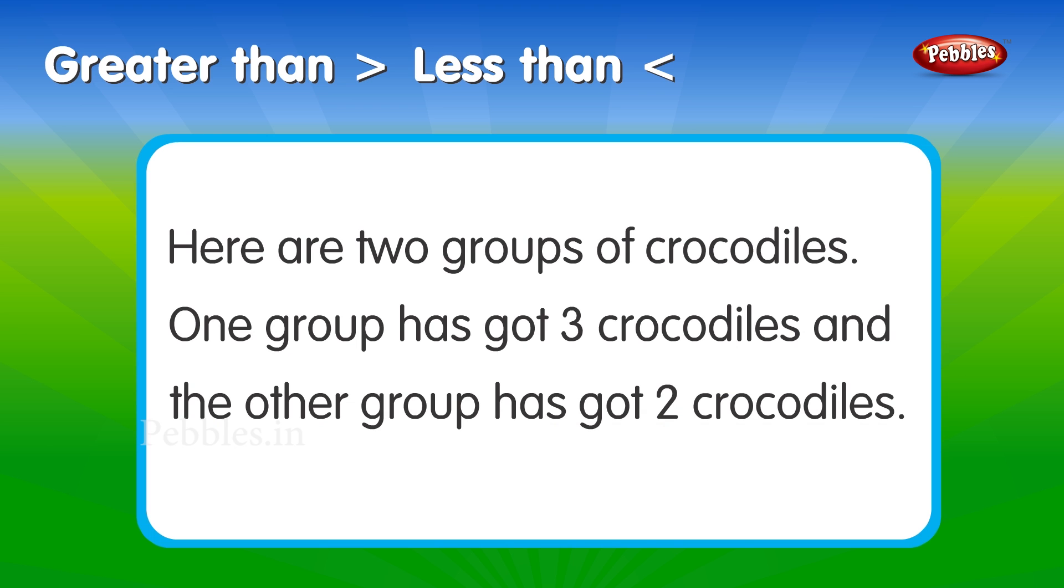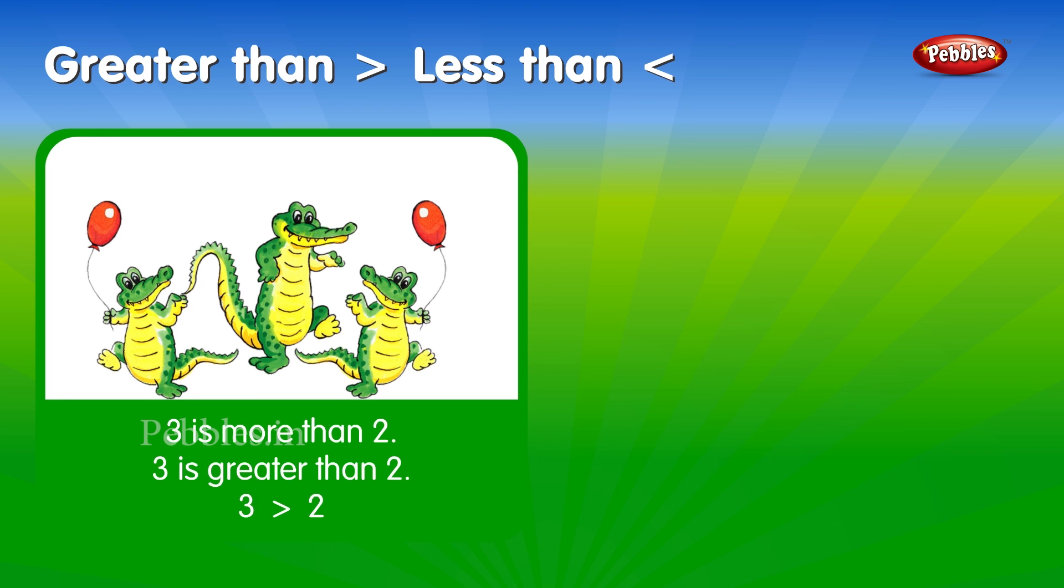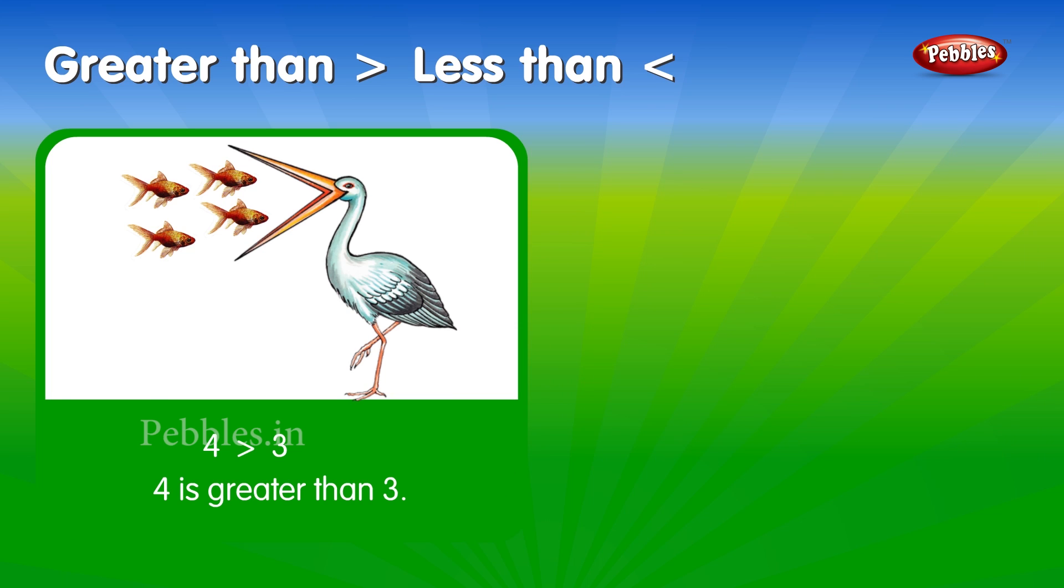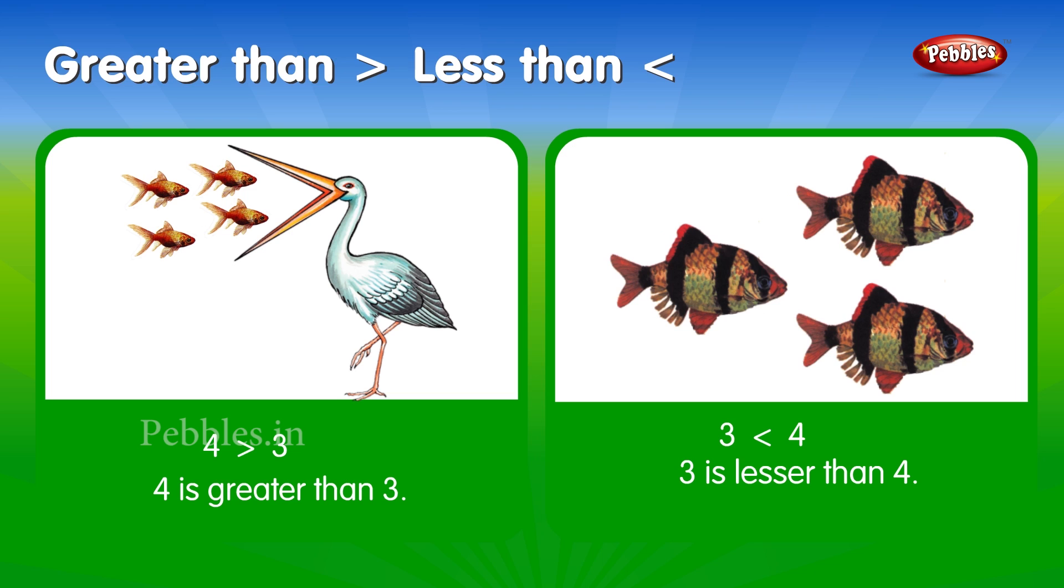Here are two groups of crocodiles. One group has got three crocodiles and the other group has got two crocodiles. Three is more than two. Three is greater than two. Two is less than three. Two is smaller than three. Four is greater than three. Three is lesser than four.